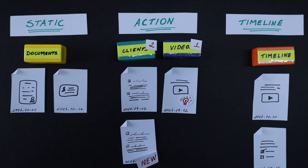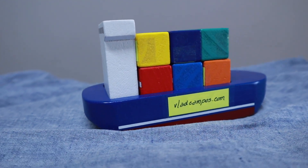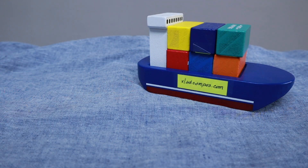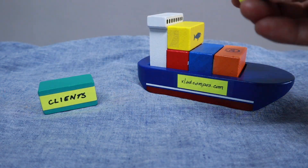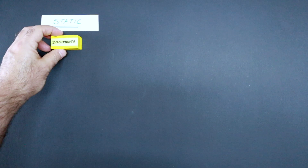Here's how it works. The system is based on what I call containers of information — spaces to keep everything related to the same topic. This can be something you are learning, a project, your clients, or even videos that you are producing. There are three types of containers. Let's start with the static containers: these are places for information that doesn't change a lot.